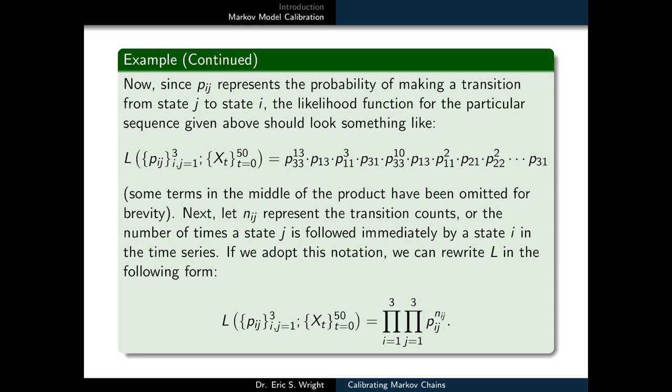And we're looking at the specific example of what the likelihood function would look like for the time series that we are pretending that we've gone out and collected from our landscape that was displayed on the previous slides. Now, some terms in the middle of this product have been omitted for brevity, but we can actually shorten that product a little bit with notation. If we let nij represent the transition counts or the number of times a state j is followed immediately by a state i in the time series, then we can use that.